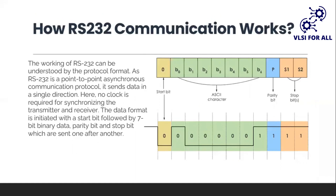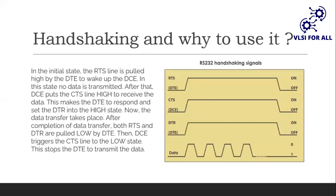The working of RS-232 communication is almost the same as UART — no clock signals are used for synchronization. Instead, RS-232 uses a start bit, a parity bit, and a stop bit. The start bit is kept low when communication begins, followed by data packets and then a parity bit. The parity bit is zero if the number of ones in the data bits is even, and one if the number of ones is odd, followed by one or two stop bits.